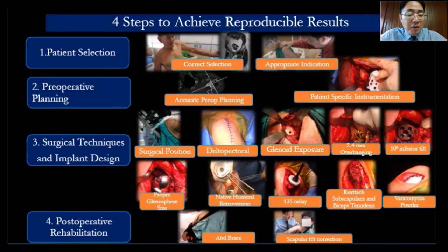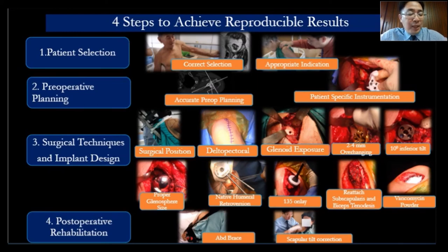To summarize, four steps to achieve reproducible results: number one, patient selection — very important; number two, pre-op planning; number three, surgical techniques and implant design; and number four, post-op rehabilitation. Thank you.